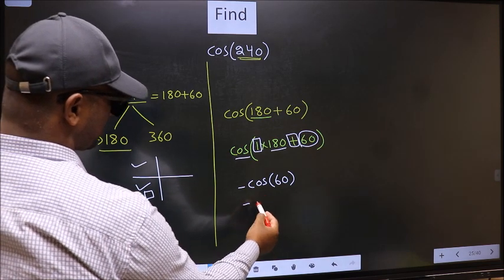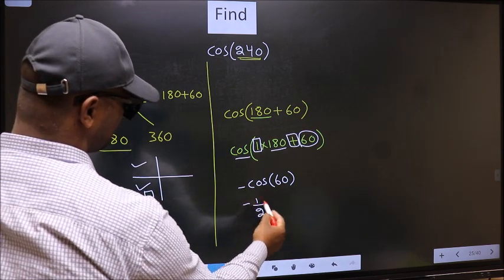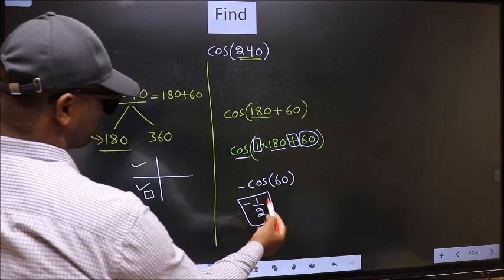So negative cos 60 is 1 by 2. This is our answer.